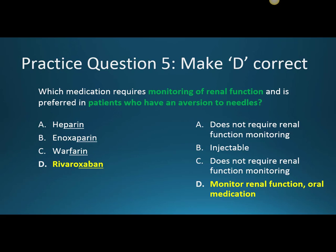Our last question: which medication requires monitoring of renal function and is preferred in patients who have an aversion to needles? We have two medications on this list that do require monitoring of renal function — that's going to be our enoxaparin or low molecular weight heparin, and our factor Xa inhibitor, specifically rivaroxaban. We can cross out heparin and warfarin as those can be used in patients that do have some renal dysfunction. Our enoxaparin is an injectable form, so that might be something we'd want to avoid in patients with an aversion to needles. So rivaroxaban, while it does require monitoring of renal function, it is an oral formulation medication, so that would be a good option for this patient.